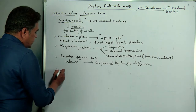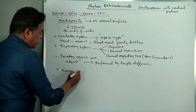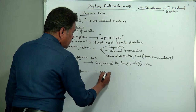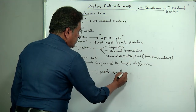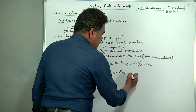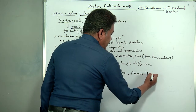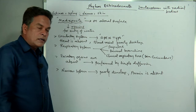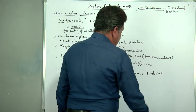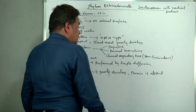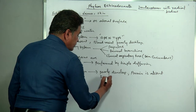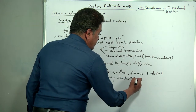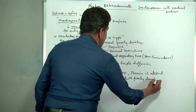The nervous system is also poorly developed, and brain is absent. Therefore we can say echinoderms are brainless and heartless animals. Since brain is absent, sensory structures are also poorly developed.